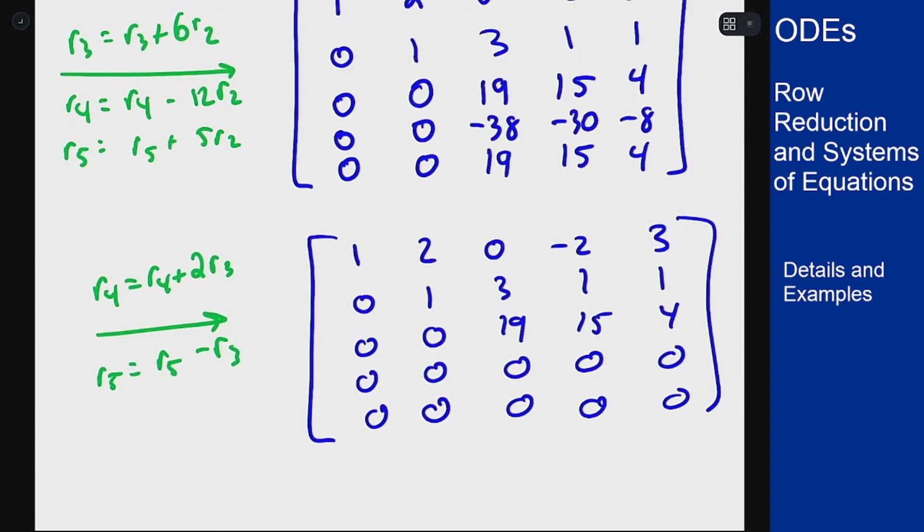If I want to get to actual row echelon form, I would divide this row by 19 to get a 1 in that spot. But really, I know there's going to be a 1 there, which means I will have pivot elements or pivot 1s here, here, and here.